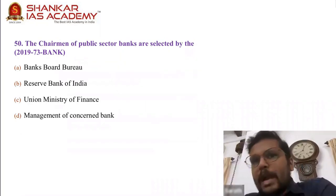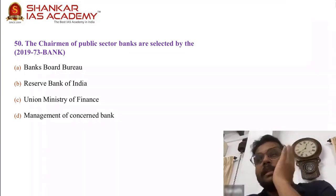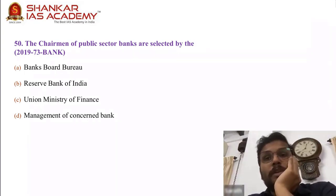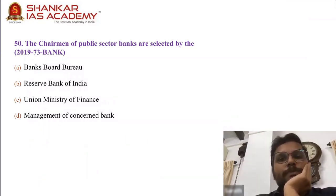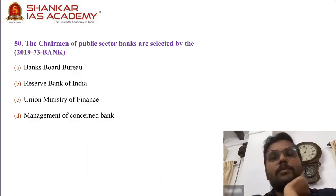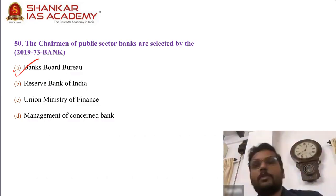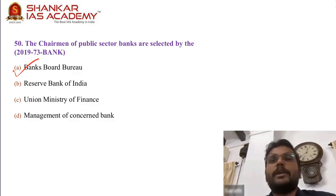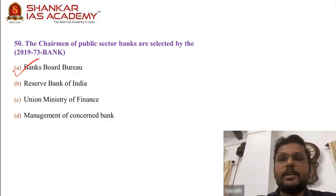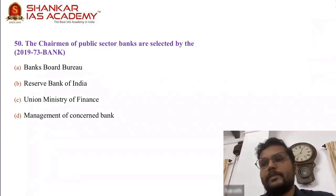Question 50: Chairman of public sector banks are selected by whom? They are appointed by the government, but selected or recommended by the Bank Boards Bureau. That is the very role for which BBB was set up. RBI will not be the answer — possibly you could think union ministry of finance since appointment is by the government, but selection is what they asked, not appointment. Selection is by the Bank Boards Bureau. 50, A.